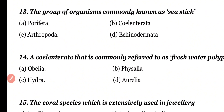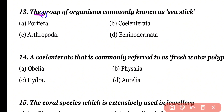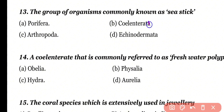Question number 13: The group of organisms commonly known as sea stick: Porifera, Coelenterata, Arthropoda, or Echinodermata. Correct answer is option B. Coelenterata is the correct answer. Coelenterata are known as sea stick because mostly coelenterates attach to rocks on the sea shore.